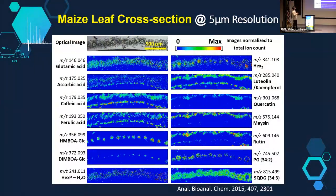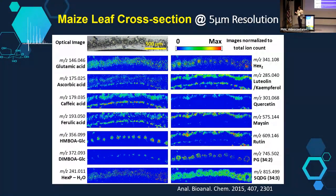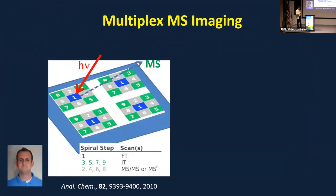Using five-micron resolution and cryo-sectioning, we imaged a maize leaf. Each different metabolite shows totally different localization: flavonoids are only in epidermal cells because they protect from UV, while chloroplast lipids are around the vascular bundles in photosynthetic cells. Most interesting, HMBOA-glucose and DIMBOA-glucose are insect repellents known to be present in the mesophyll, but we found they are present right in between vascular bundles — not all mesophyll. This is only detectable by direct tissue analysis, not by single-cell laser microdissection.